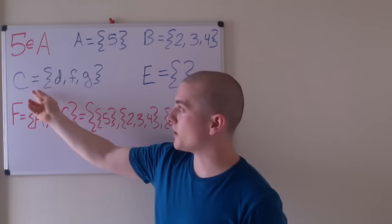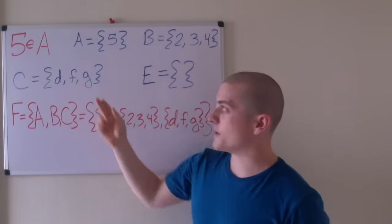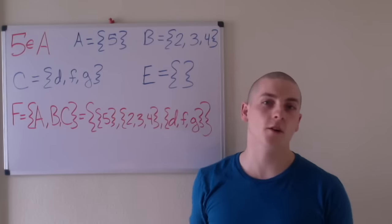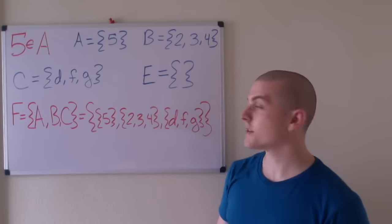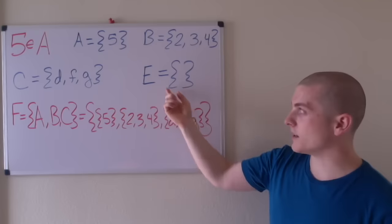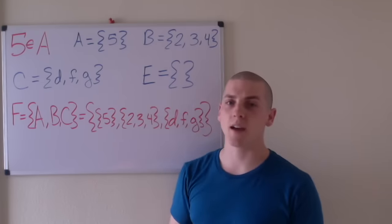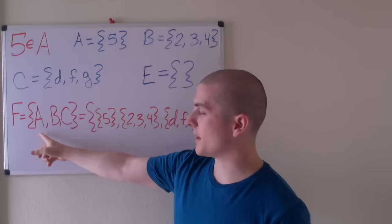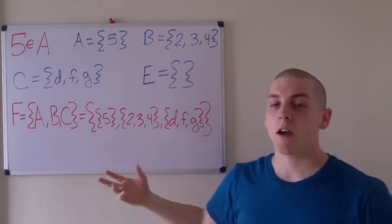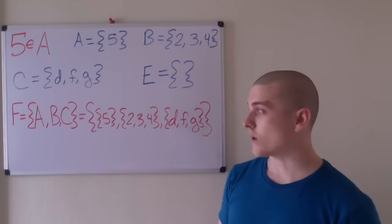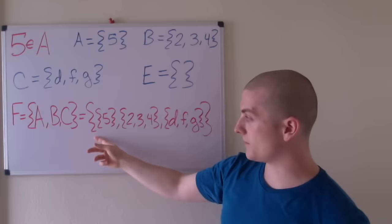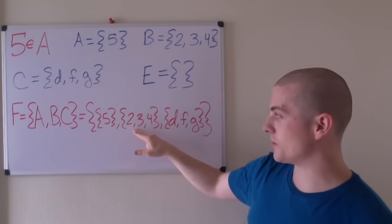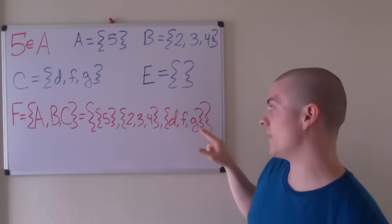The set C equals the set containing elements D, F, and G. Now D, F, and G don't have to be variables — they're either variables or they can be characters, it just depends on the context. The set E contains no elements in this case, which has an impact that you'll see in future videos. And finally, the set F equals the set containing elements A, B, and C. In this case our elements are sets, so we would read this as F equals the set containing the set containing the element 5, the set containing elements 2, 3, and 4, and the set containing D, F, and G.